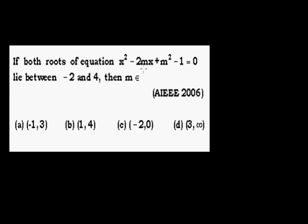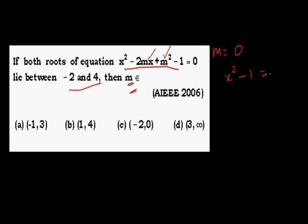Next: both roots of the equation x² - 2mx + m² - 1 = 0 lie between -2 and 4. Find the range of m. It says both roots of this equation vary between -2 and 4. Let's try putting m = 0. The equation becomes x² - 1 = 0, giving x = +1 and x = -1.